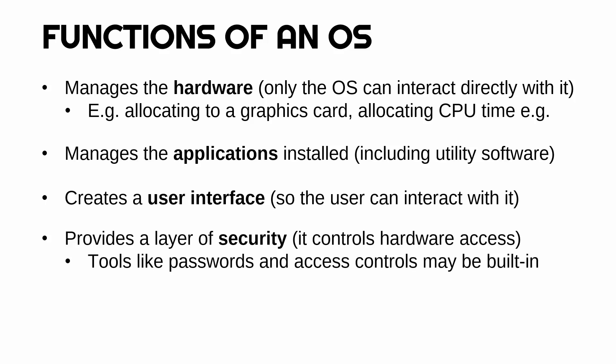The OS also provides a layer of security because it sits between the hardware and other programs, meaning it can control hardware access. If there is a suspicious program installed, it can prevent it from accessing the CPU. There'll also be tools like passwords and access controls built in — meaning certain accounts can't access certain files or programs. You might have seen messages like 'administrator access is required'; those are to do with access controls.